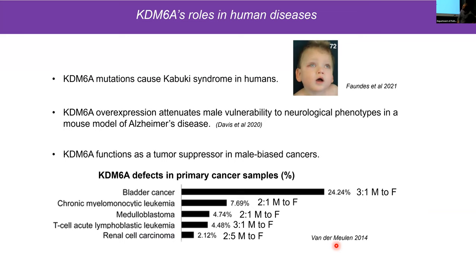KDM6A is also involved in many human diseases. It's causative in Kabuki syndrome, where individuals have characteristic facial features, cognitive deficiencies, developmental delay, and sometimes cleft lips or cleft palates. It also serves a protective effect in mouse models of Alzheimer's disease — overexpression of KDM6A in males to restore it to a female or XX level attenuates male vulnerability in AD. It's also been shown to be a tumor suppressor in male-biased cancers — for example, 24% of bladder cancers have some kind of somatic defect in KDM6A, and bladder cancer has about a three-to-one male bias.